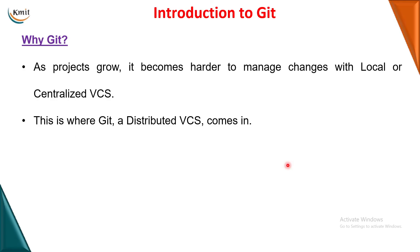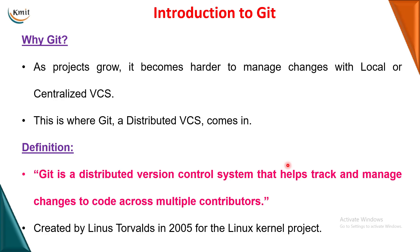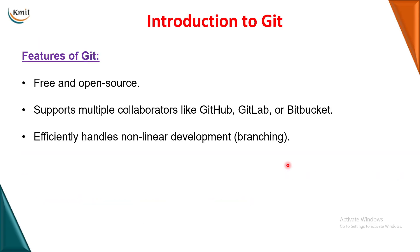Git is one of the tools of the distributed version control system. It is basically a distributed VCS — a tool that helps developers track the changes they are making. Git is installed in the local system, so every developer has their own Git software installed to track their changes. It was introduced in 2005. Key features: it is free and open source; it helps collaborate with GitHub, GitLab, and Bitbucket; it uses a concept called branching; and it keeps full history of all changes.